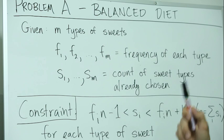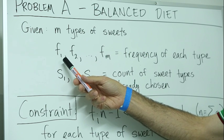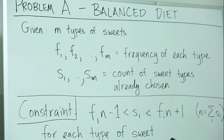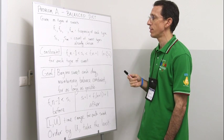For each of the M types of candies or sweets, there's a desired frequency with which he will eat those sweets, and he eats a sweet once a day. He eats one type of sweet each day.